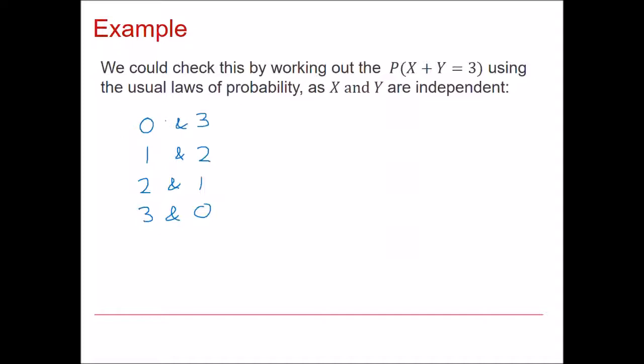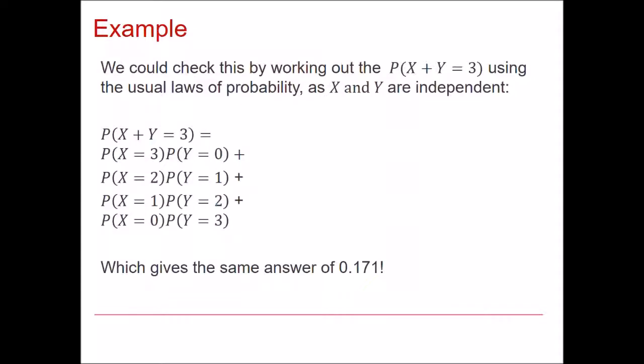And you would work out each of these probabilities. So the probability x is equal to 0 times the probability y is equal to 3, and so on. And then you'd add all of these four up. And if you do that, you will get exactly the same answer, 0.171.